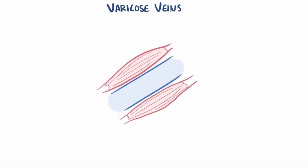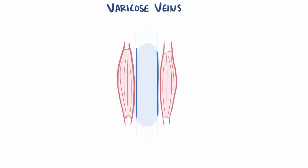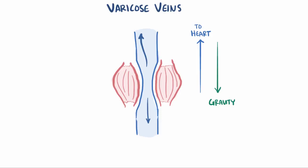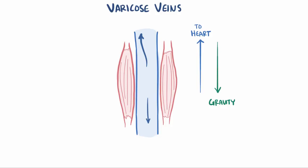Let's think about the veins in the legs when you're standing. To get to the heart, the blood has to go up, which is working against gravity. So if your calf muscles contract and squeeze the blood inside, some blood gets propelled downward, while some gets propelled upward. But then gravity pushes that upward moving blood back down, and it doesn't seem like much gets accomplished.